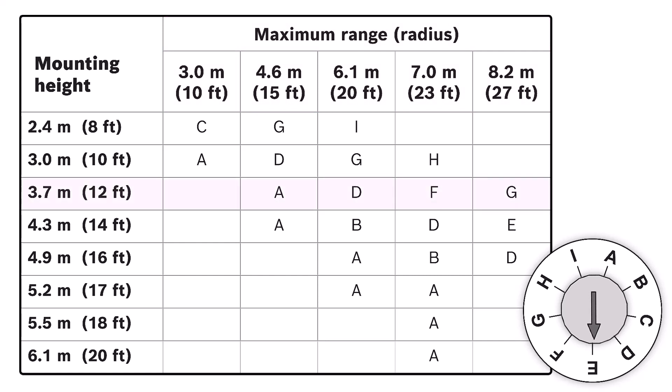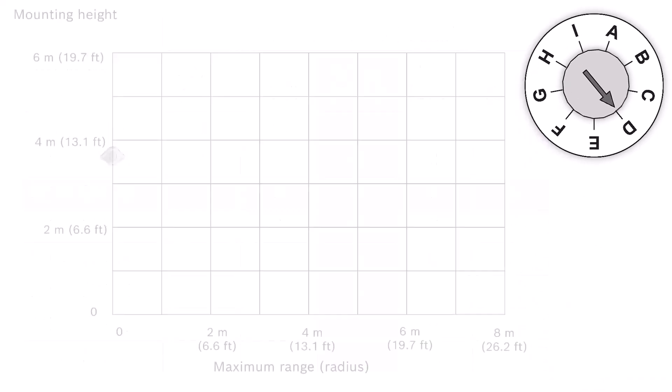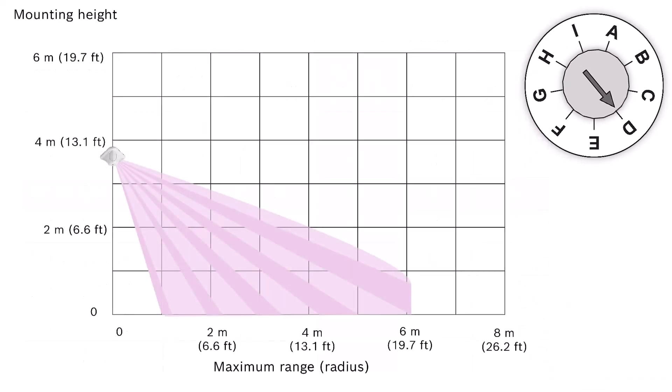For example, if we are mounting the detector at a height of 3.7 meters (12 feet), and we want a radius of 6.1 meters (20 feet), we would set the dial to letter D. This is the detection pattern for this example.